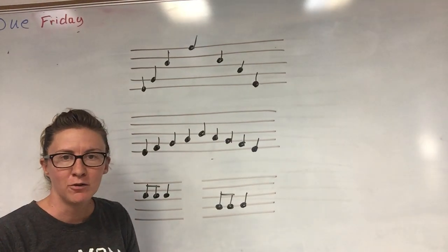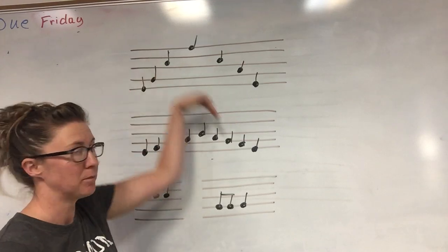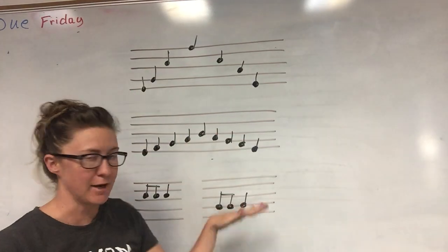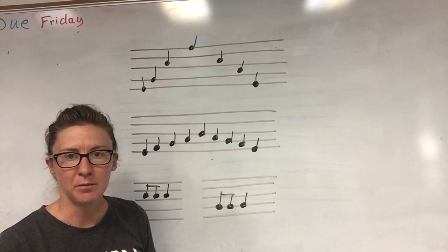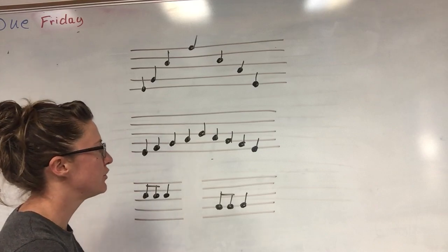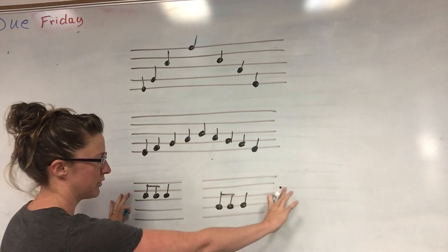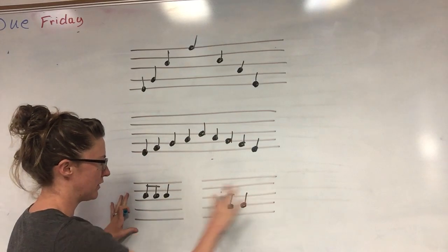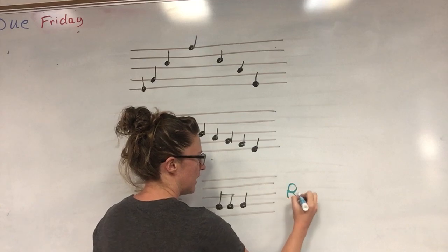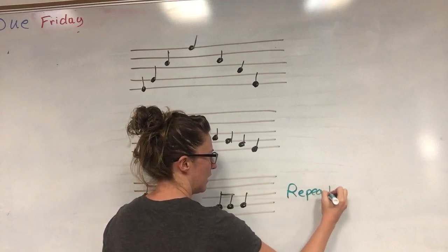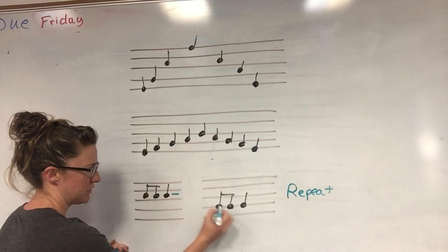We're talking about how notes can move — they can move up and down, or they can stay the same. There are two different ways they can move up and down. Starting with the repeating one: it's the same note, repeating, either on the same line or in the same space.